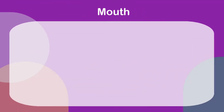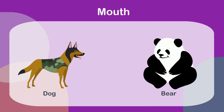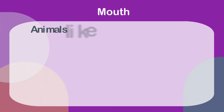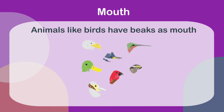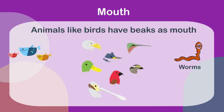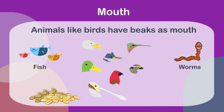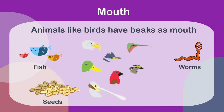Mouth: some animals like dogs and bears have a long mouth called a snout. Some animals like birds have beaks as mouths, which help them catch worms, fish, seeds, and grains.